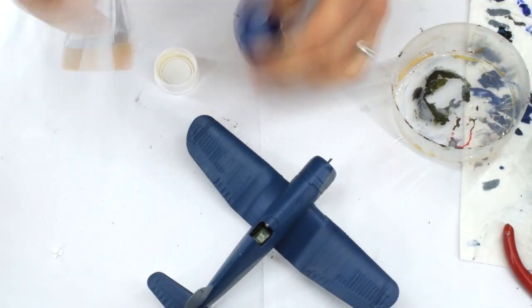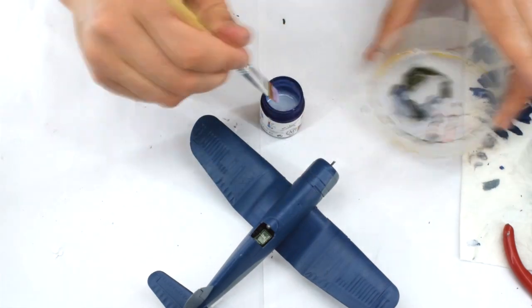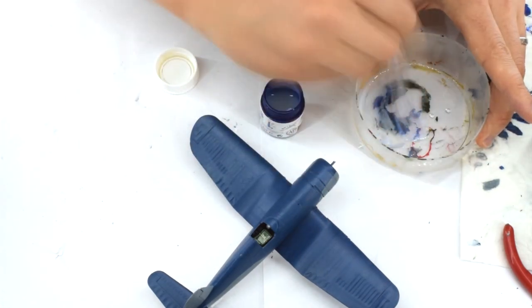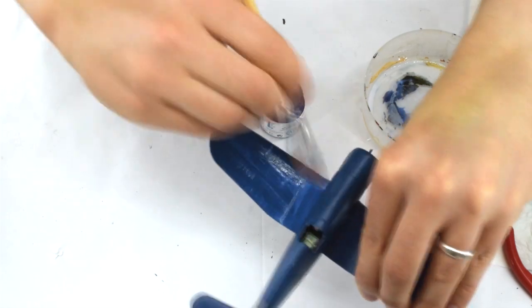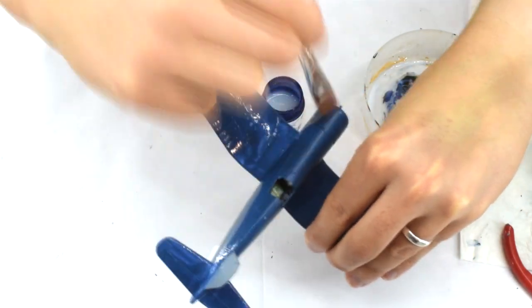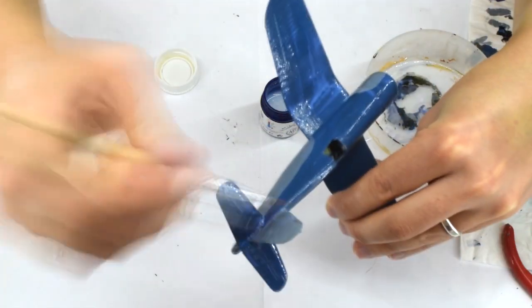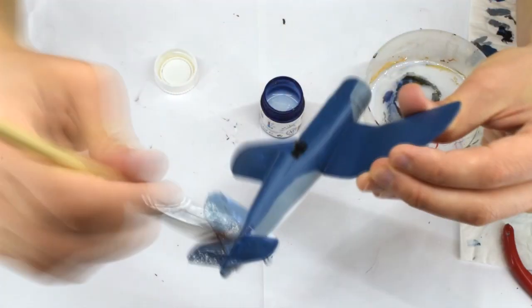Humbrol 135 satin varnish was thinned with some water and then applied to the entire model. This will help give a uniform finish ready for the application of decals. The satin layer will prevent the transfers from silvering when they are applied.